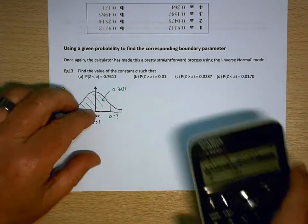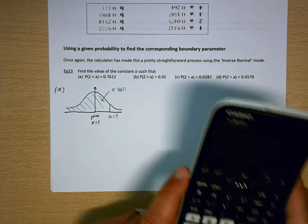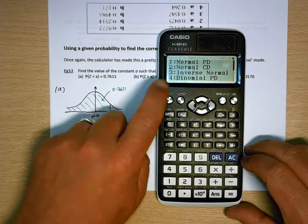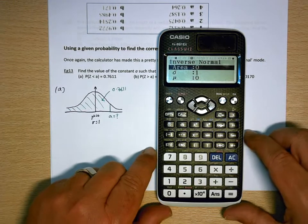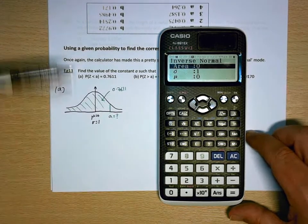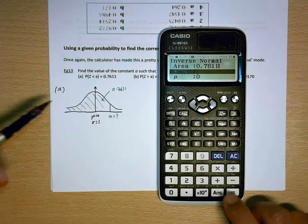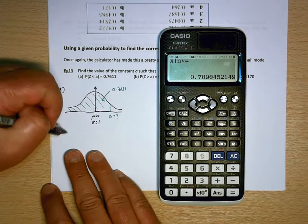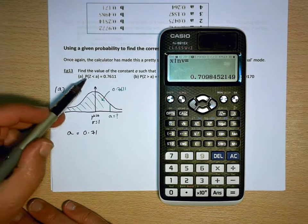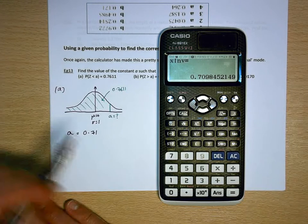So on my calculator, I need to go to 7 for the normal distribution. And this time I'm going to select 3, the inverse normal. And that automatically takes me to the standard normal distribution. So I can see standard deviation of 1, mean of 0. And what I want to type in is the area of 0.7611. And that would give me a boundary a of 0.71. So the probability that z is less than 0.71 is going to be 0.7611. And that's pretty much all there is to it.